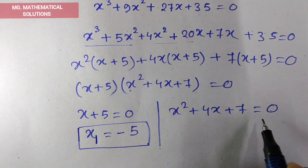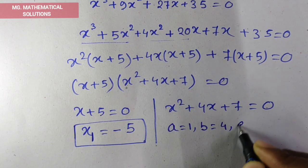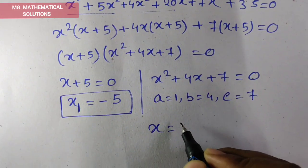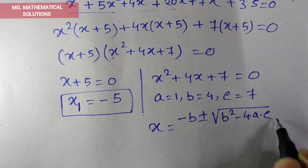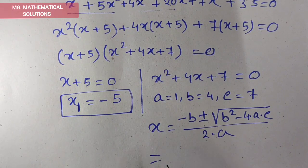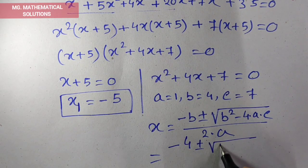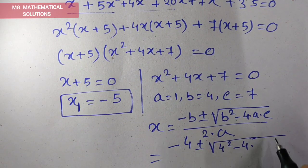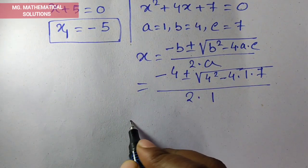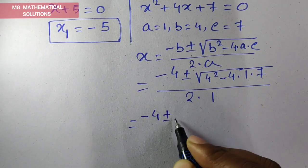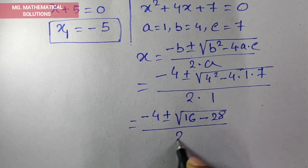Now we solve the quadratic x² + 4x + 7 = 0. Here a = 1, b = 4, c = 7. Using the quadratic formula: x = [−b ± √(b² − 4ac)] / 2a = [−4 ± √(16 − 28)] / 2 = [−4 ± √(−12)] / 2.